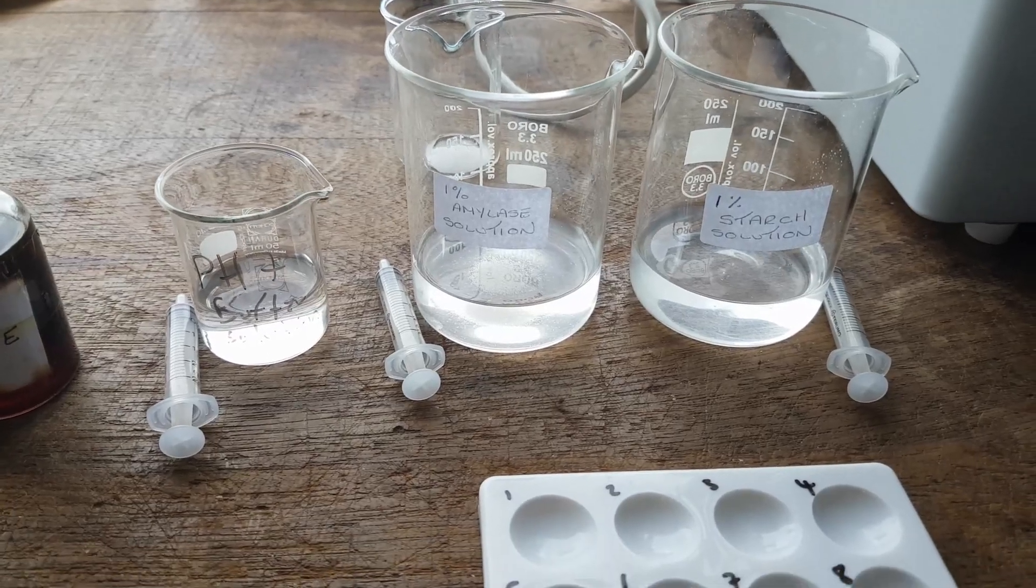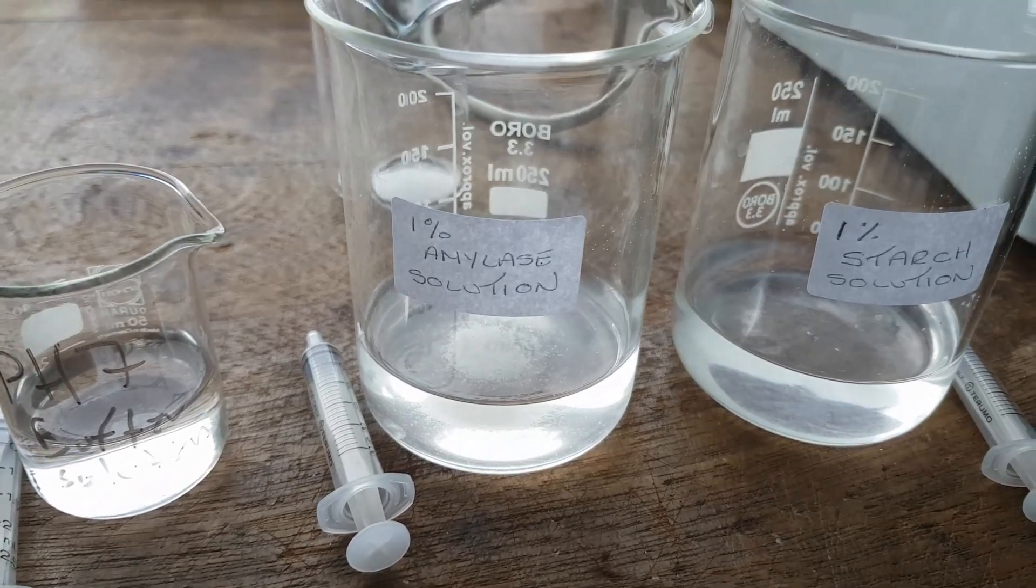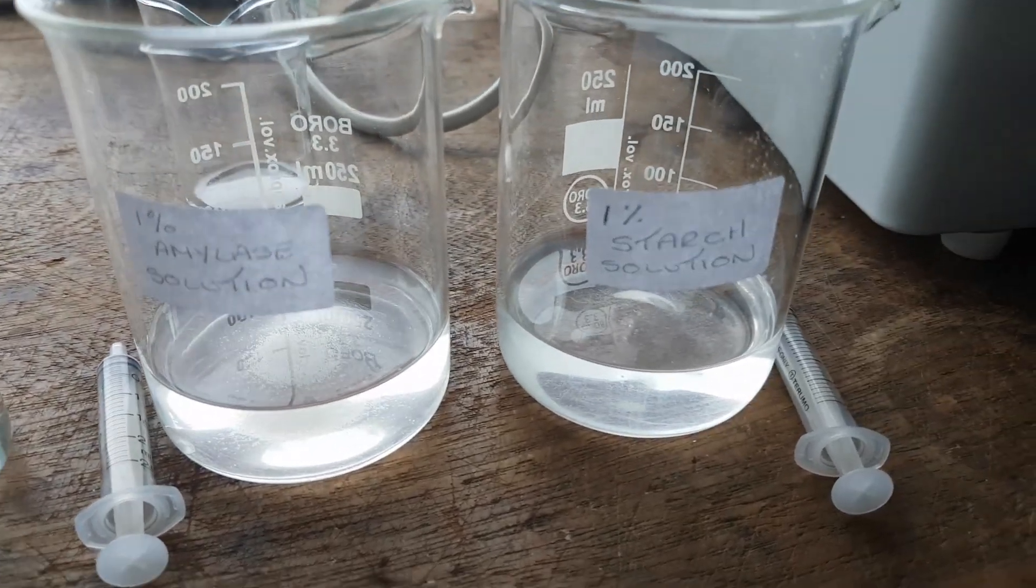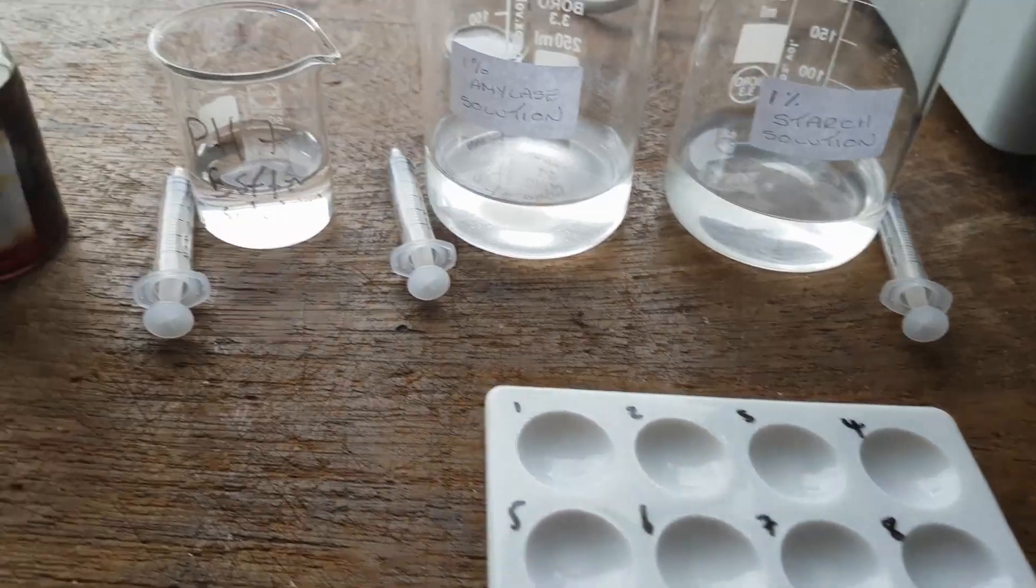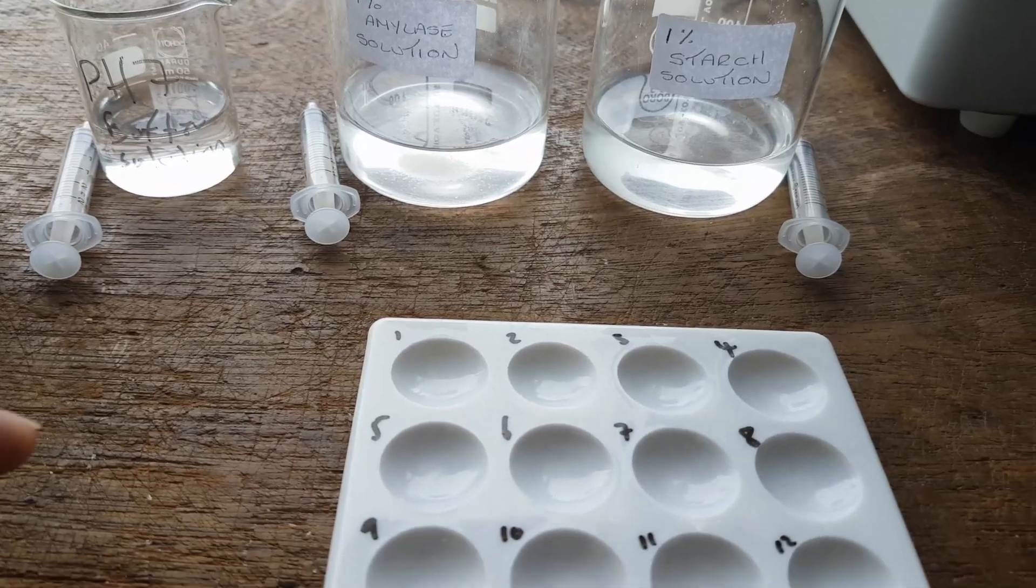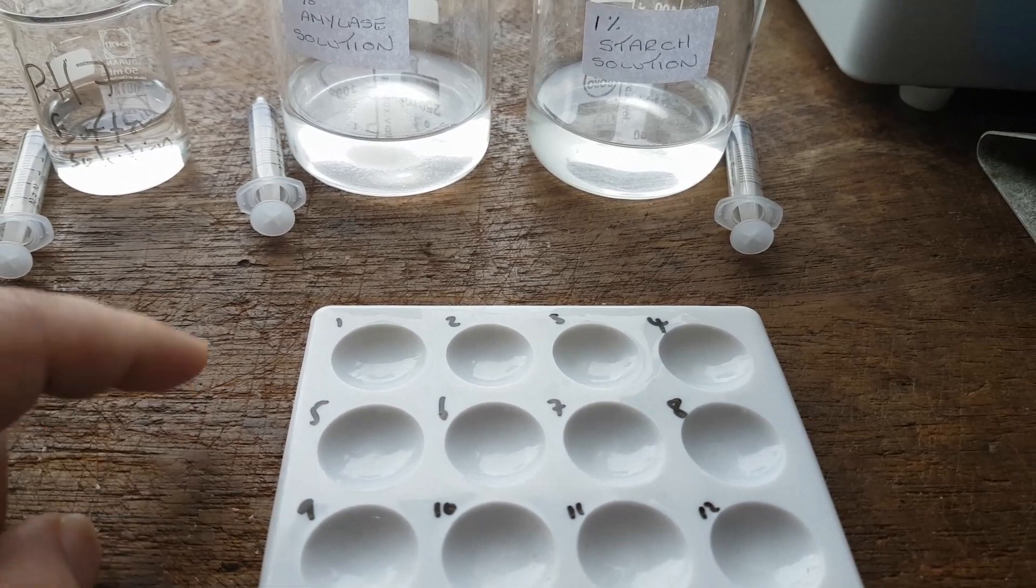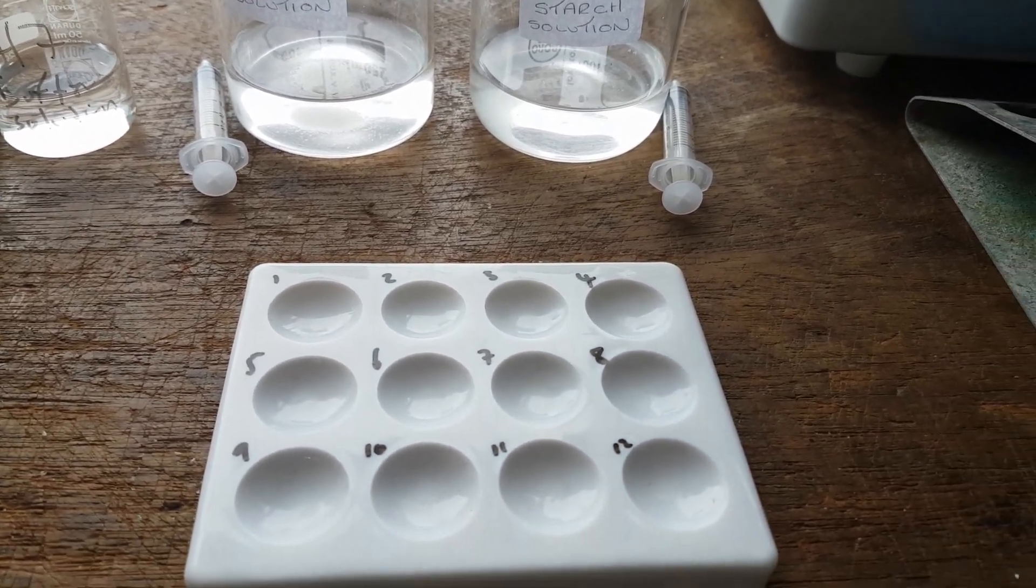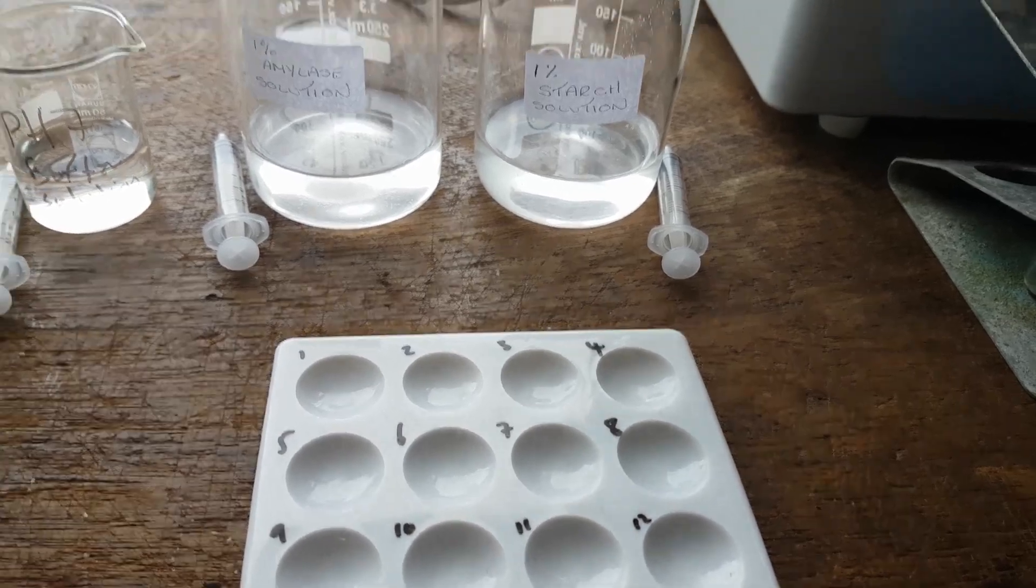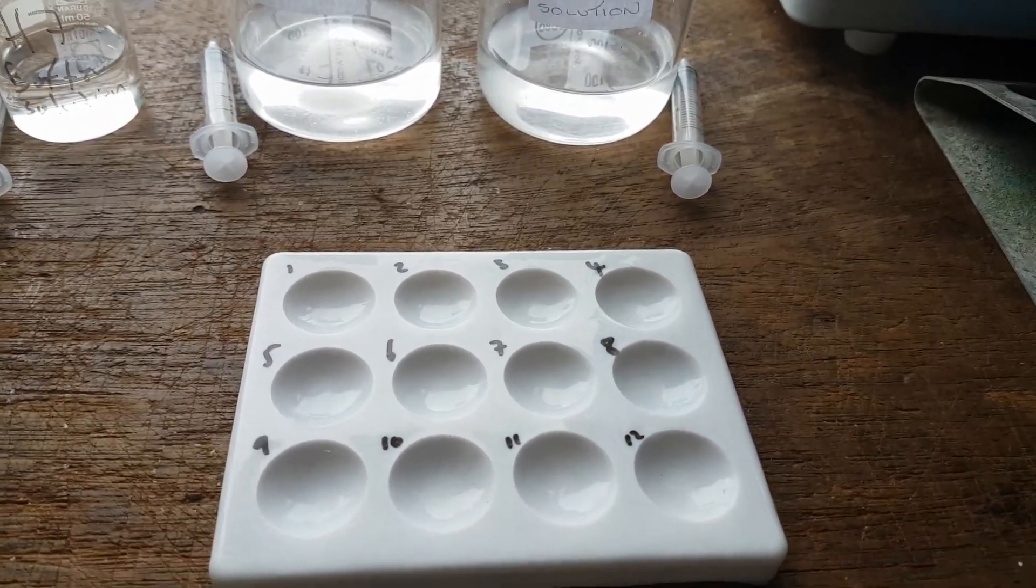So the idea behind this experiment is the amylase solution, the enzyme, will break down the starch. We're going to test how long it takes to break it down when we're changing the pH. What we expect eventually over time is that the iodine will turn blue-black until all the starch has been used up and converted into sugar by the amylase solution. Then there will be no color change.